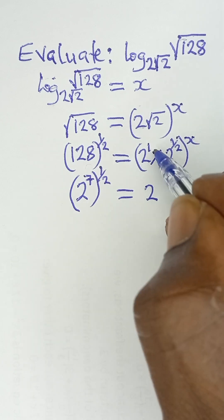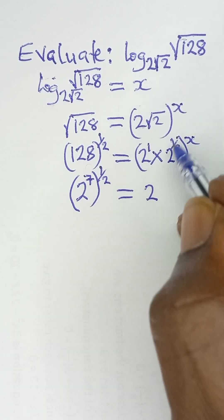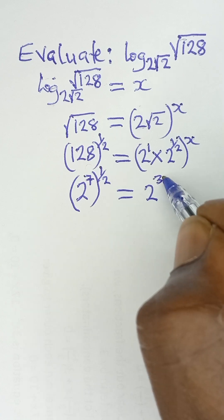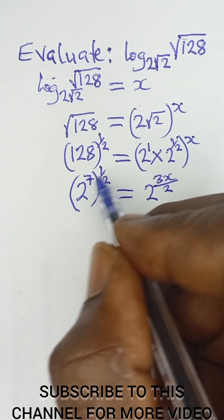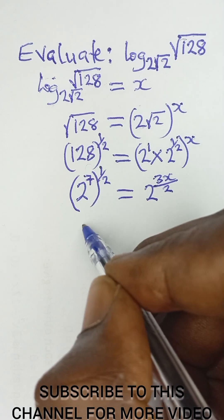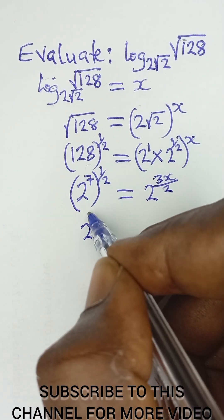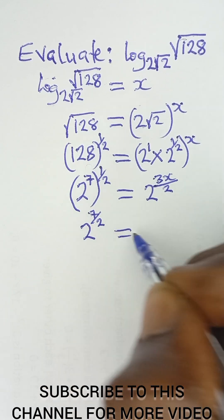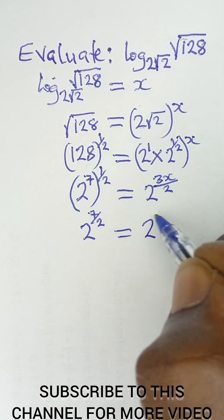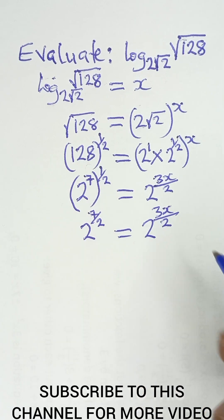In indices, when you have power and power, you multiply them together. So 3 over 2 multiplied by x gives 3x over 2. Multiplying the left side gives 2 raised to power 7 over 2, which equals 2 raised to power 3x over 2.